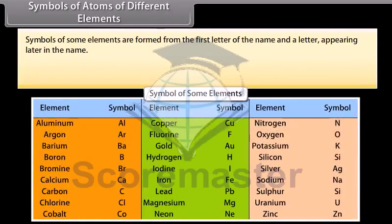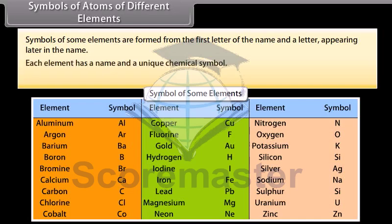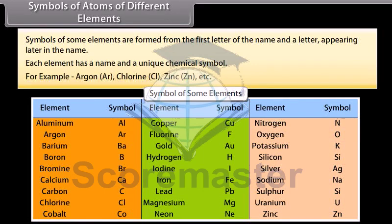Symbols of some elements are formed from the first letter of the name and a letter appearing later in the name. Each element has a name and a unique chemical symbol. For example, Argon Ar, Chlorine Cl, Zinc Zn, etc.